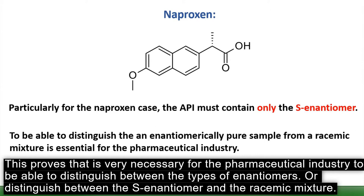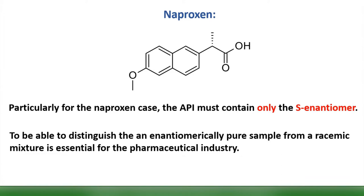This proves it is very necessary for the pharmaceutical industry to be able to distinguish between the types of enantiomers — specifically, to distinguish between the S-enantiomer and the racemic mixture.